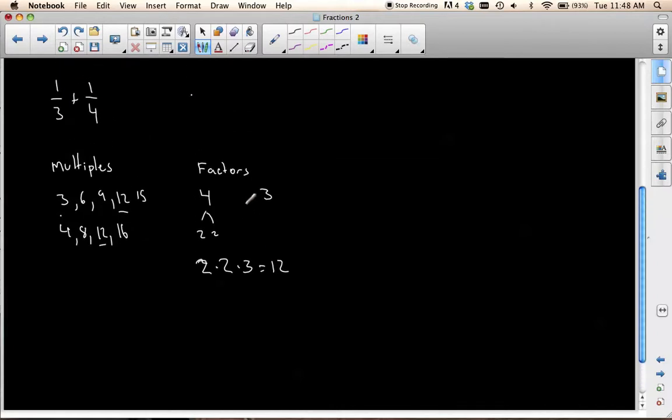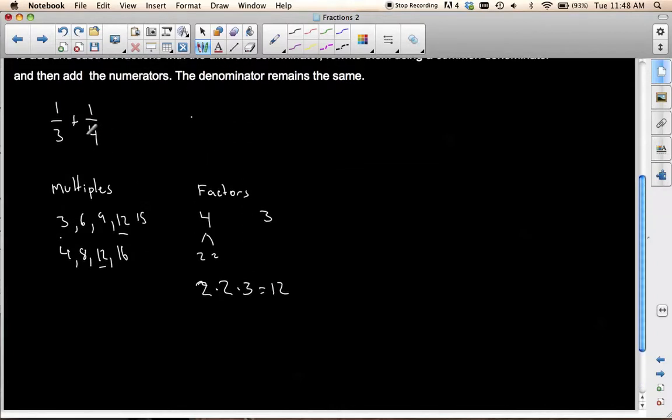So I know that to add these two together, I need to make sure I have the common denominator. So what number times 3 will give me 12? Well, I know it's 4. And what number times 4 will give me 12? Well, I know it's 3. So 4 times 1 is 4, and 4 times 3 is 12. 1 times 3 is 3, and 4 times 3 is 12.